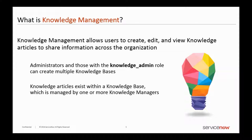We want to have a process in place where people cannot publicize articles without going through an approval process. That process has to be pragmatic — it cannot slow things down, but rather speed things up. Within ServiceNow, if somebody creates an article, a manager or a series of individuals may need to authorize the release of that information before it can actually be released. This creates a layer of protection for the individual who created the document, so they don't inadvertently release proprietary information.